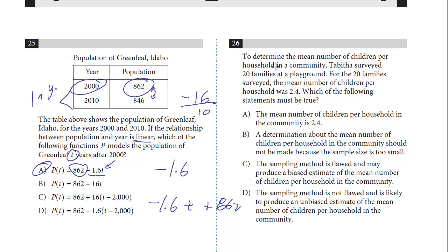Let's take a look at question 26. To determine the mean number of children per household in a community, Tabitha surveyed 20 families at a playground. For the 20 families surveyed, the mean number of children per household was 2.4. Which of the following statements must be true?